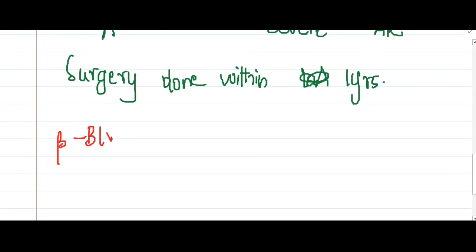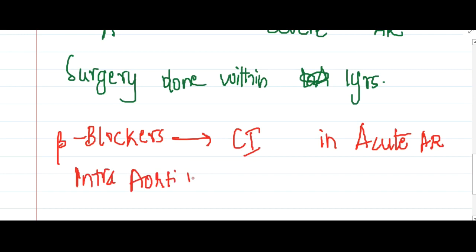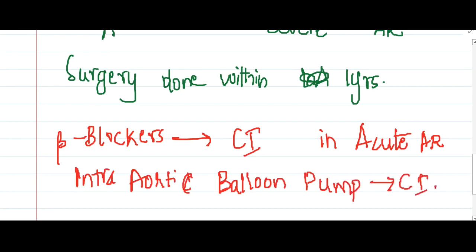Beta blockers are absolutely contraindicated in acute aortic regurgitation. Intra-aortic balloon pump is also contraindicated, as it will worsen the aortic regurgitation. These are the important contraindications in aortic regurgitation.